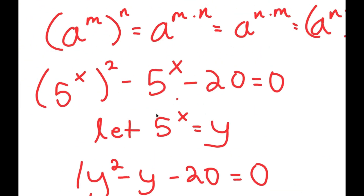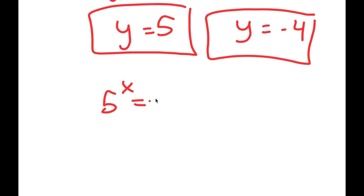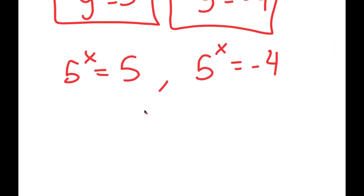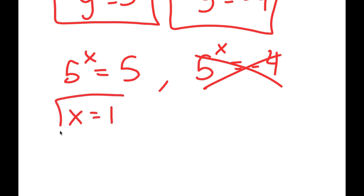Remember how we let 5 to the power of x equal to y, so this means I get two equations: 5 to the power of x equals 5, and 5 to the power of x equals negative 4. For 5 to the power of x equals negative 4, we can't take the power of a positive number and get a negative number, so this equation has no solution. For 5 to the power of x equals 5, we can see that 5 to the power of 1 equals 5, because anything to the power of 1 is itself. So x equals 1 is my solution.